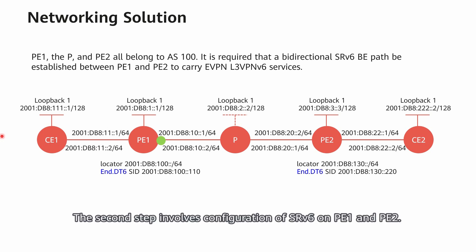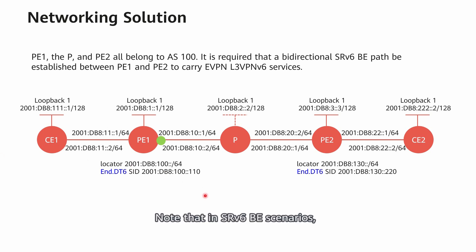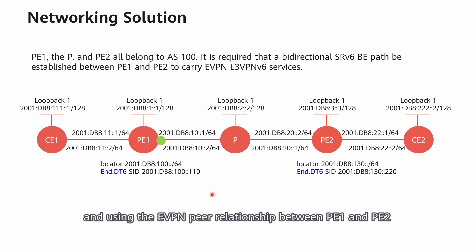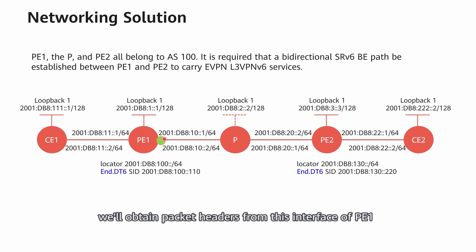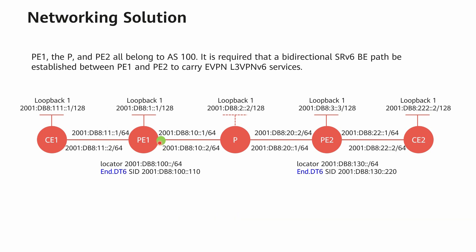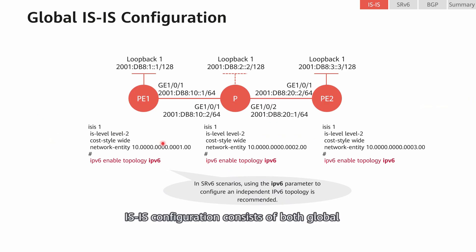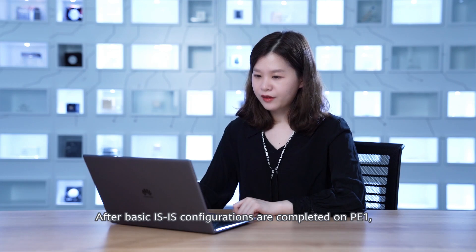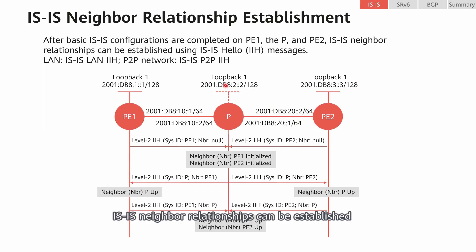The second step involves configuration of SRV6 on P1 and P2. Note that in SRV6 BE scenarios, SRV6 does not need to be configured on the P. Finally, the last step involves establishing a BGP-EVPN peer relationship between P1 and P2, configuring CE access, and using the EVPN peer relationship to advertise routes between C1 and C2. For ease of understanding, we'll obtain packet headers from the interface of P1 for in-depth packet parsing. Let's start by looking at how to configure IS-IS. IS-IS configuration consists of both global and interface-specific configuration, and these configurations are the same as those in the EVPN L3 VPNv4 scenario.